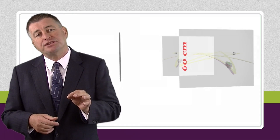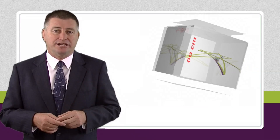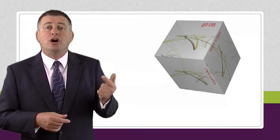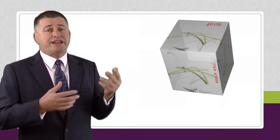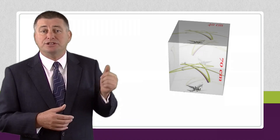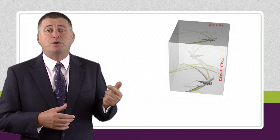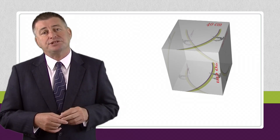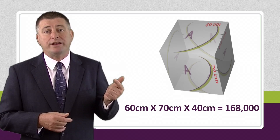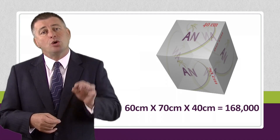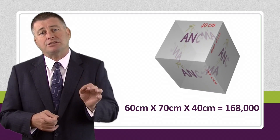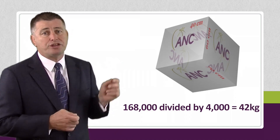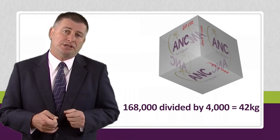So how does cubic weight or measurement work? How is it calculated? We look at a typical package and multiply the width by the height by the depth. Let's take an example where we might have a package that's 60 cm by 70 cm by 40 cm. If we multiply those three, we get 168,000. We then divide that by an industry standard calculation of 4,000. By dividing 168,000 by 4,000, we come up with a cubic weight of 42 kg.